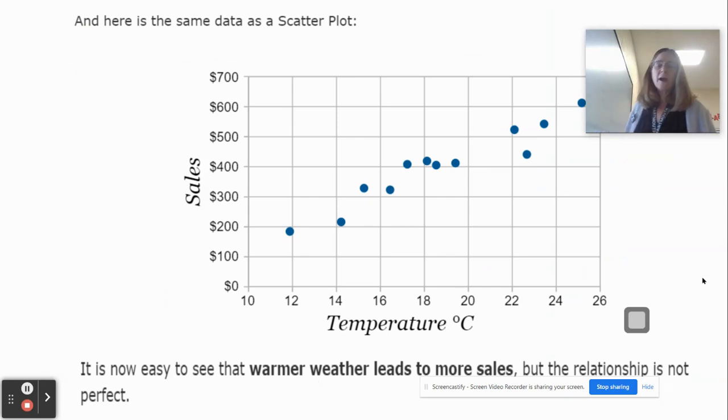So once we put it in a scatter plot, it's a little easier to see. It has a positive trend. And you can see as the temperature increases, the sales are also increasing. A little bit easier to see in a scatter plot. It's not a constant rate of change. And that's what makes it a scatter plot.